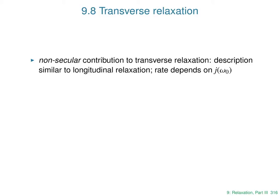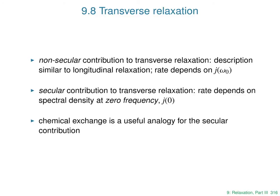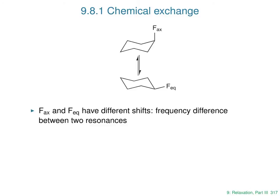So there are two contributions. The non-secular contribution is caused by transverse local fields oscillating near the Larmor frequency — exactly the same as for longitudinal relaxation — and its rate depends on the spectral density at the Larmor frequency. The secular contribution is caused by the Z component of the local field, resulting in a spread of different Larmor frequencies, and its rate depends on the spectral density at zero frequency. That's the key distinguishing feature of the secular contribution. To understand why, it's useful to think about chemical exchange as an analogy.